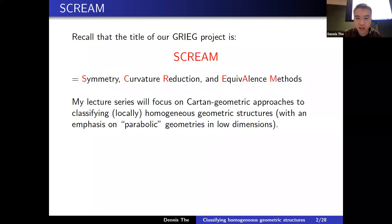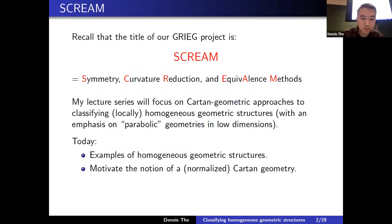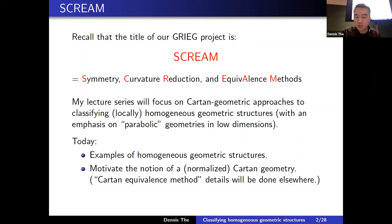I didn't want to assume any background in Cartan geometry, so this first lecture is largely motivational. Today I'll start with examples of homogeneous geometric structures, building up to motivation for the notion of a normalized Cartan geometry. There is a general method called Cartan's equivalence method, but I won't go into its full details — the emphasis in later lectures will be on Cartan reduction and curvature reduction material.